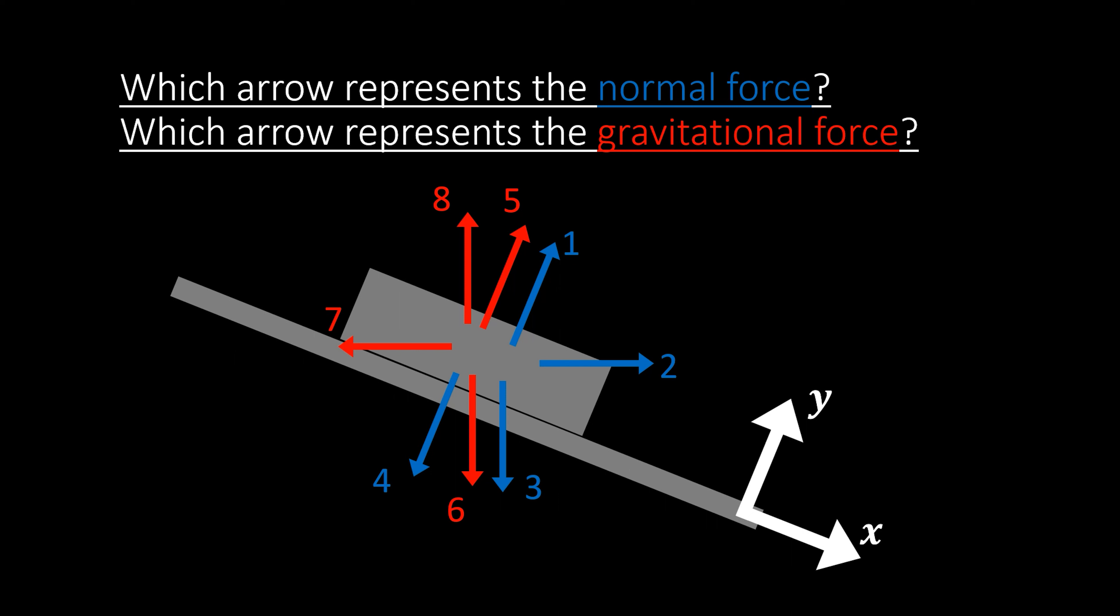Here we've drawn two sets of arrows. The blue arrows represent the normal force and the gravitational force is represented by the red arrows. So take some time and think about which arrow represents the normal force and which arrow represents the gravitational force. You have four options for the normal force: arrows 1, 2, 3, and 4, and arrows 5, 6, 7, and 8 correspond to the options for the gravitational force.